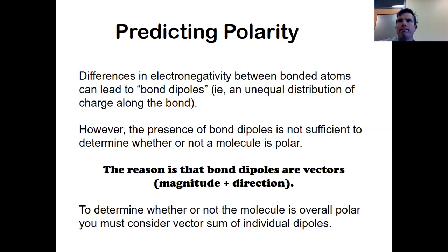And if you have two atoms with a difference in electronegativity, that can cause what's called a bond dipole. That is an unequal distribution of charge along the bond. In HF, it's pulling the electrons towards the fluorine.